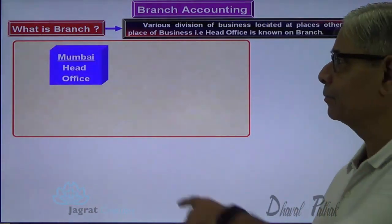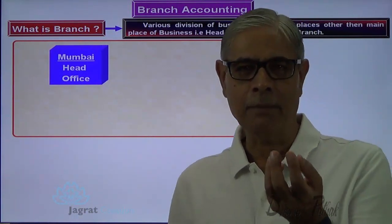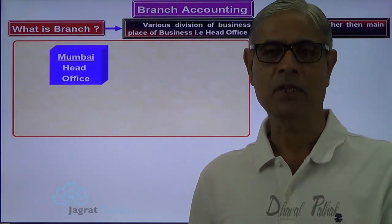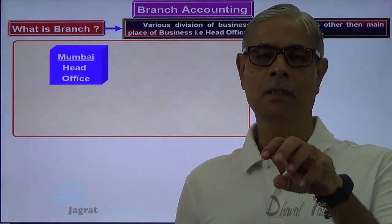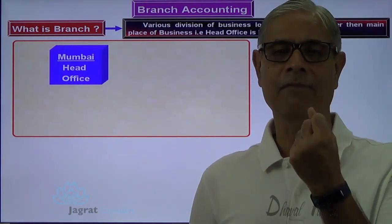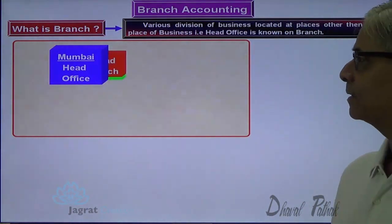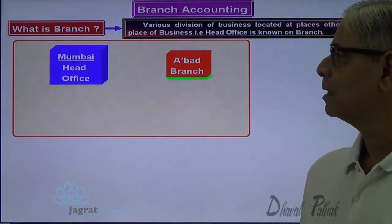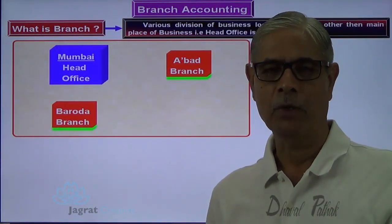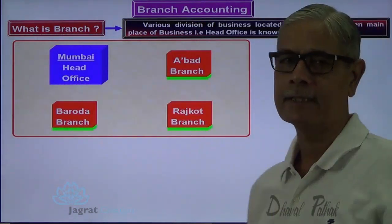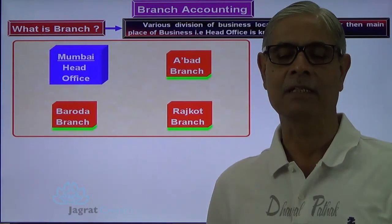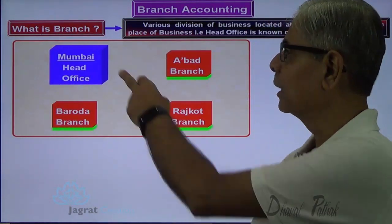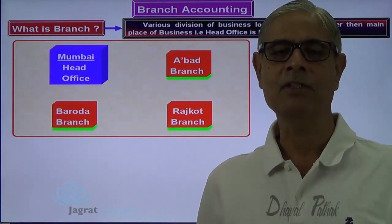For example, Mumbai head office — whatever the business functions: purchase, sales, finance, administration, personal management — all those functions perform for a common ownership of a business. But some of the functions are performed at a location other than Mumbai, meaning Ahmedabad branch. Similarly, Baroda branch, Rajkot branch. So these are the branches. So far as the business activities are concerned, all those activities are conducted under one ownership, but the locations for doing the activities are different — that's why they are known as branches.